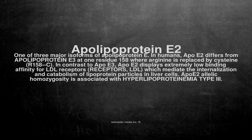Apolipoprotein E2 is one of three major isoforms of apolipoprotein E. In humans, APOE2 differs from apolipoprotein E3 at one residue, position 158, where arginine is replaced by cysteine (R158C).